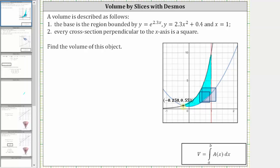So let's go ahead and set up the integral to find the volume, and then we'll evaluate the integral using Desmos. So the volume is equal to the integral from negative 0.258 to one of the square of the top function minus the bottom function, which is e raised to the power of 2.3x minus the quantity 2.3x squared plus 0.4.